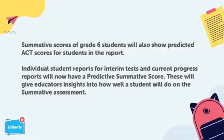Test Nav tools are updated for easier administration of the ACT-ASPIRE test. Summative scores of grade 6 students will also show predicted ACT scores for students in the report. Individual student reports for interim tests and current progress reports will now have a predictive summative score, giving educators insights into how well a student will do on the summative assessment.